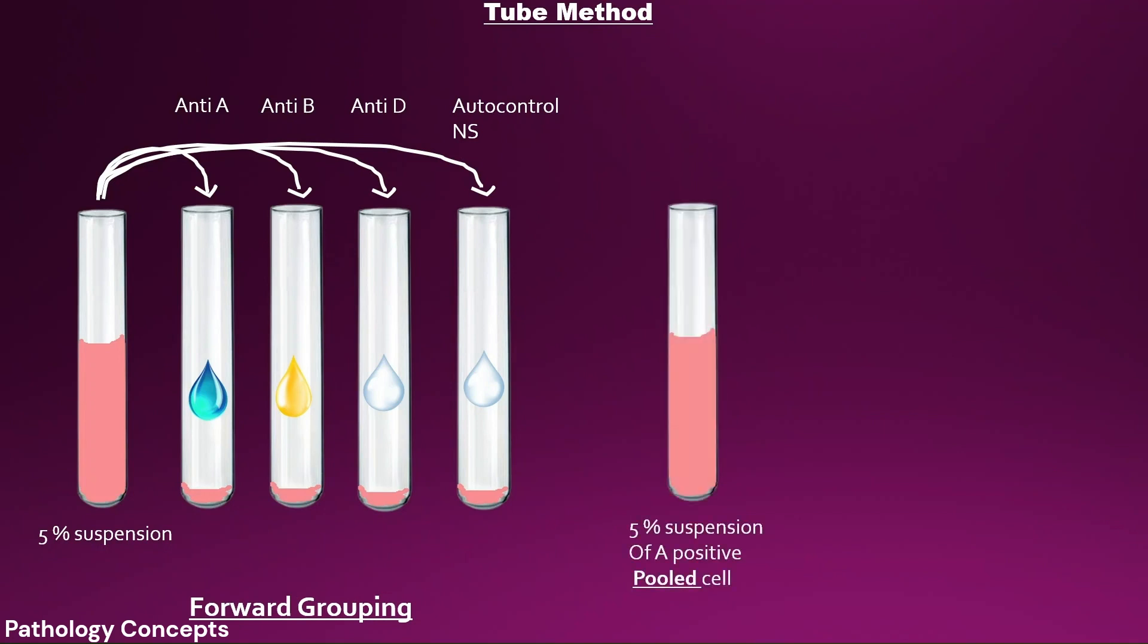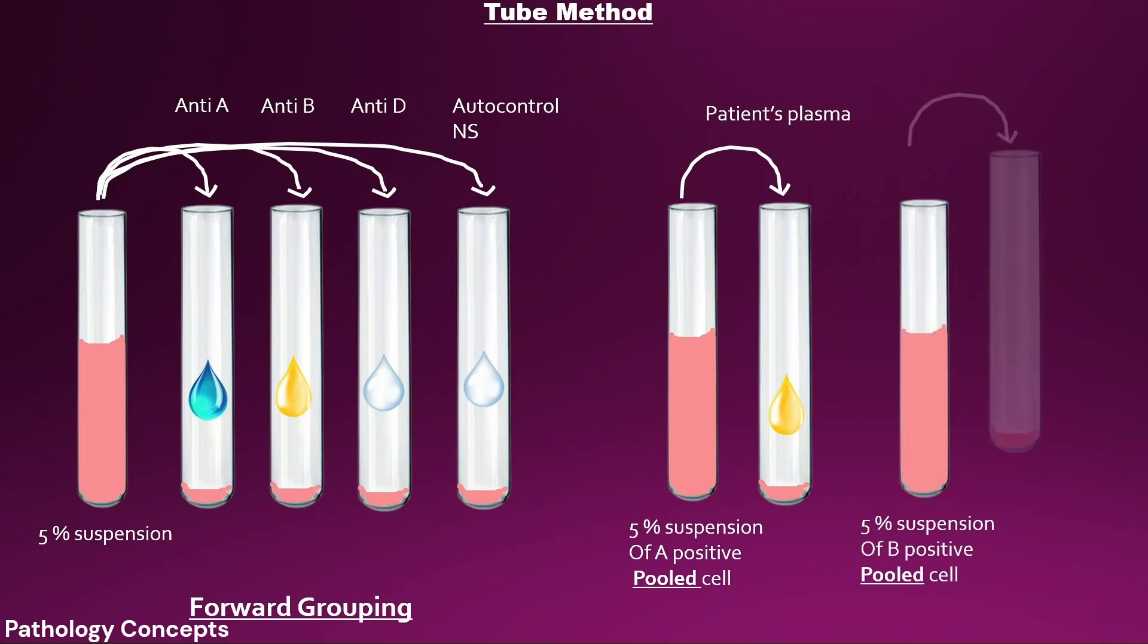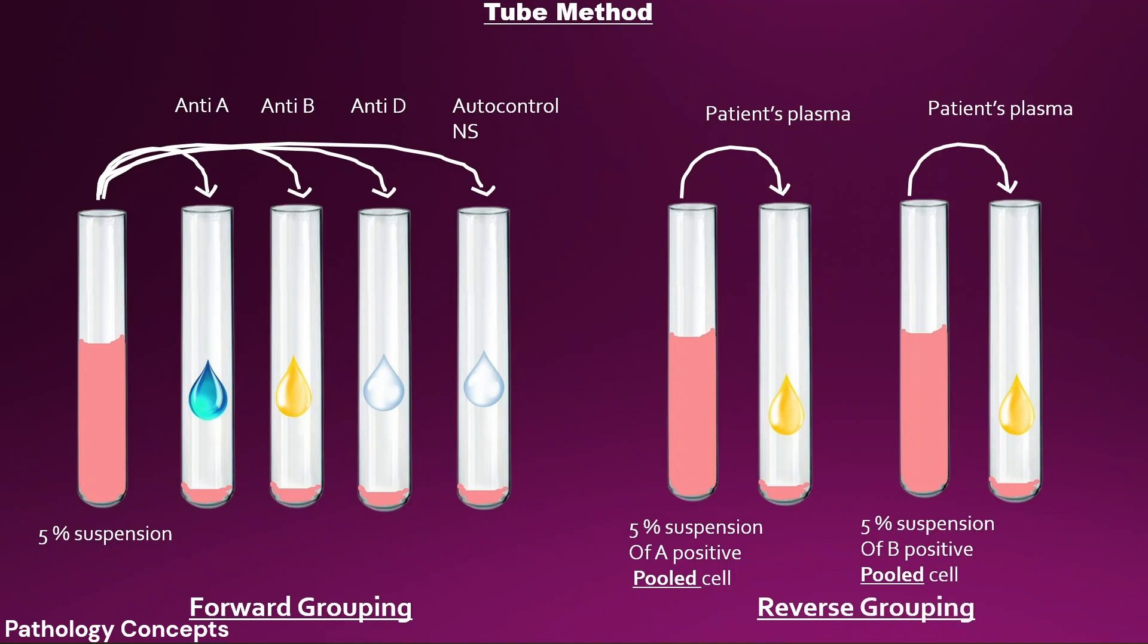Now, prepare 5% suspension of pooled A and pooled B cells from randomly selected 3A and 3B positive blood group samples. Add 1 drop of 5% suspension of pooled A positive cells into tube 5 and add 1 drop of patient's plasma in it. Add 1 drop of 5% suspension of pooled B positive cell into tube 6 and add 1 drop of patient's plasma in it. This is called reverse grouping.